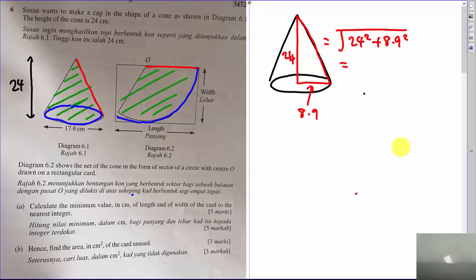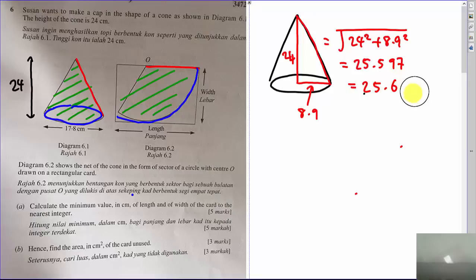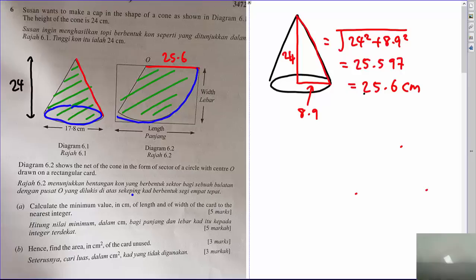My answer is 25.59, which is very close to 25.6, so I use 25.6 cm. Since the slant height equals the radius of the sector, the radius of the sector is 25.6 cm.